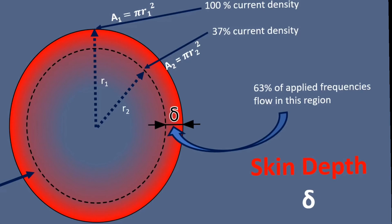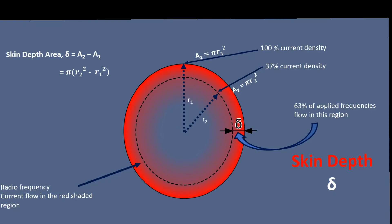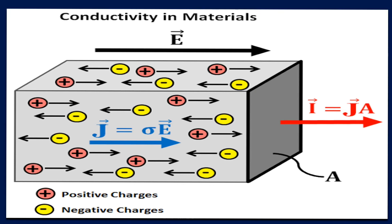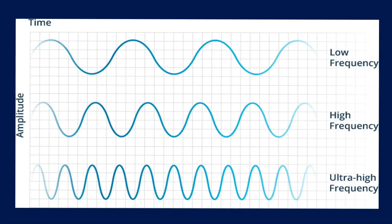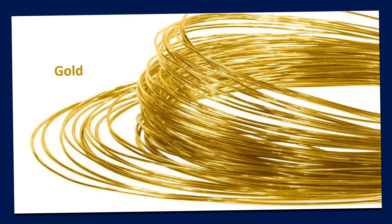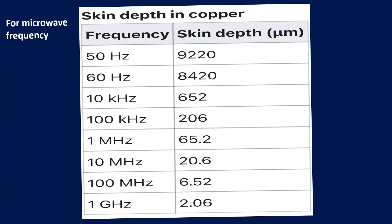More clearly, AC frequency or radio frequency current will flow only in the skin depth zone. That means 63% of the frequency current will flow in the skin depth zone. Skin depth value depends on the material's permeability, the material's conductivity, and the applied frequency. Different materials have different skin depths — such as copper, aluminum, silver, and gold. For example, in copper at microwave frequency, the skin depth value reduces gradually as the frequency increases.